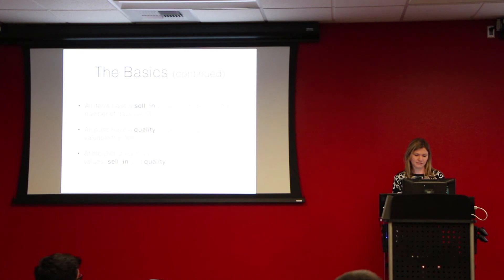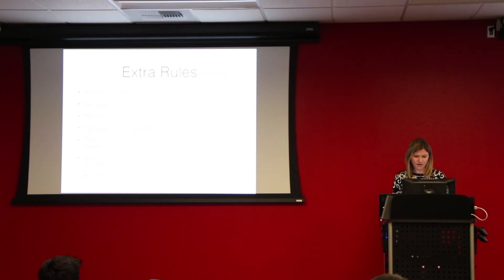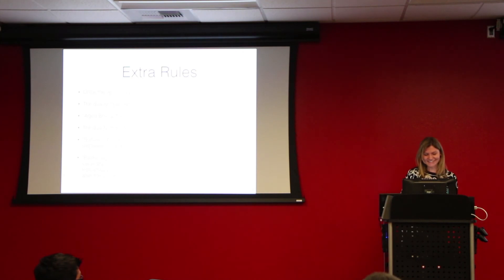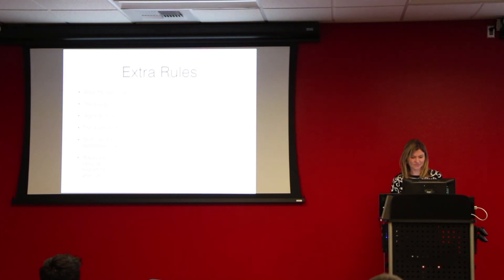At the end of each day, the system lowers the sell-in by one — it depends on what the item is — and it lowers the quality for every item in your store. There are also extra rules. Once the sell-in value has reached zero, the quality goes down twice as fast. The quality of an item can never be negative. Aged Brie increases instead of decreasing as the item gets older. The quality of an item can never be more than 50. Sulfuras, which is a World of Warcraft reference, never has to be sold or decreases in quality. Backstage passes, like Aged Brie, increase in quality as the sell-in value approaches — by two when there's ten days left, then by three when there's less than five days. After the concert, the quality drops immediately to zero.